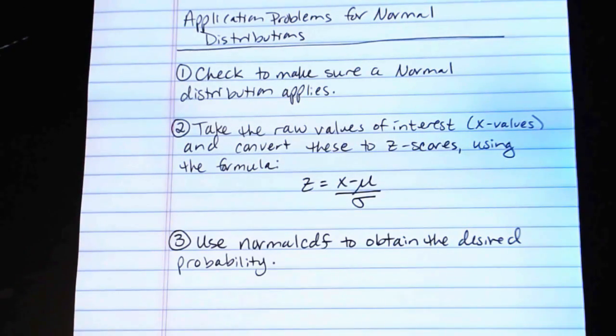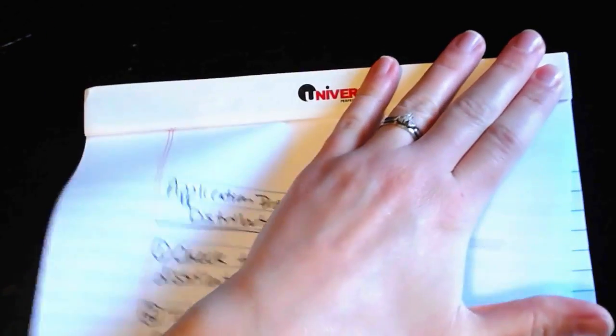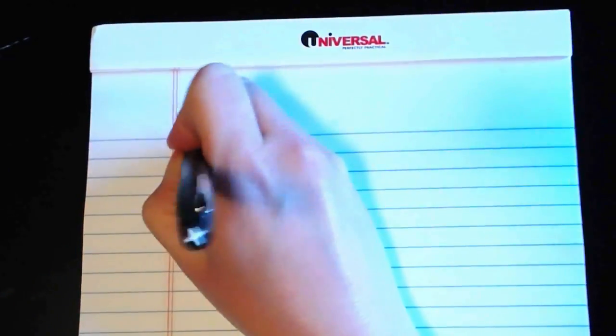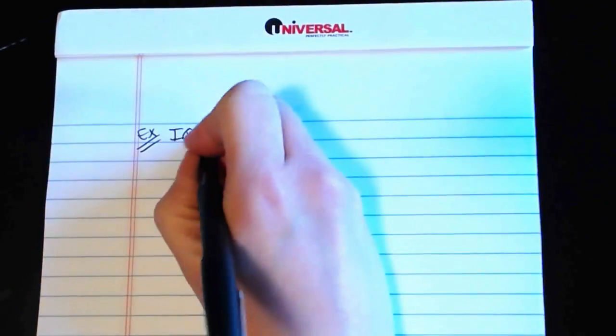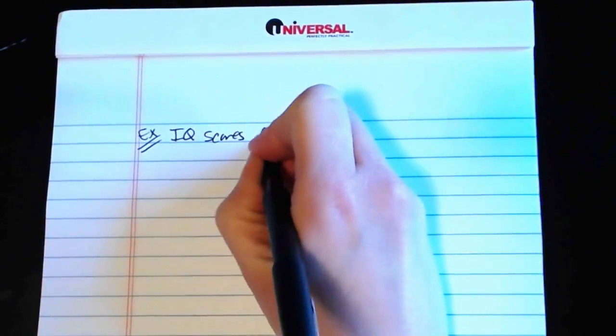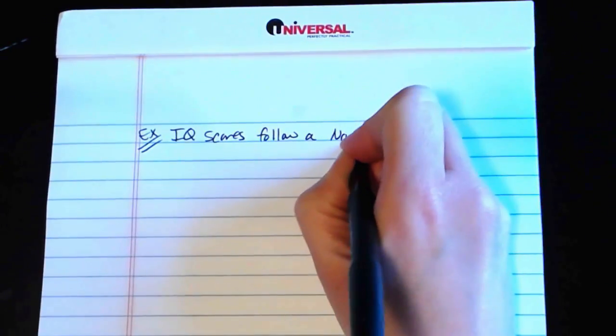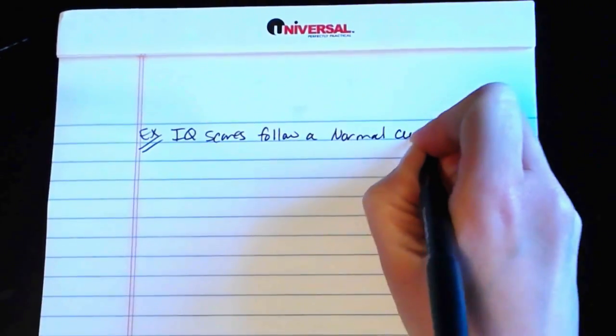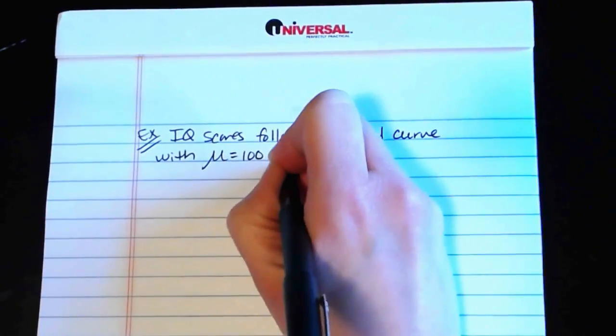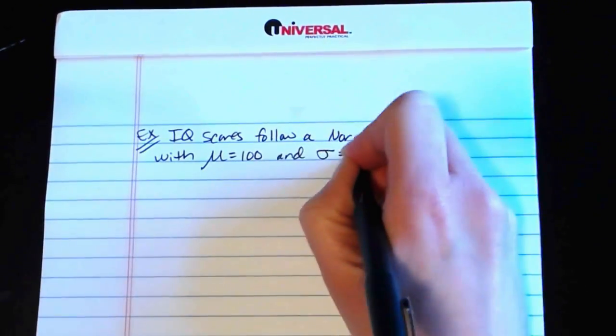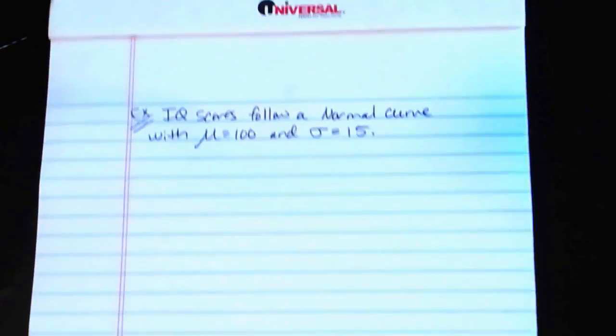So we were looking at examples with the distribution of IQ scores, and we'll just go back to that because it's a handy problem to discuss. So let's say we're dealing with IQ scores, and we know they follow a normal curve with mu equals 100 and sigma equals 15. Okay, so that's just given.